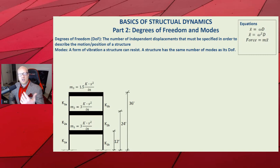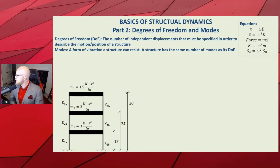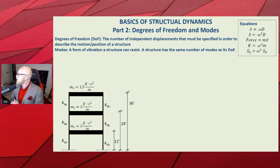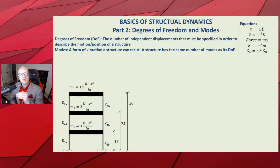x-double-dot, the second derivative of position, is the acceleration, equal to omega-squared times the displacement d. Force equals mass times acceleration. k equals omega-squared times mass. And we can also say that the spectral acceleration is equal to omega-squared times the displacement. We'll talk about what spectral means when we discuss input motion and ground motion in the next video.